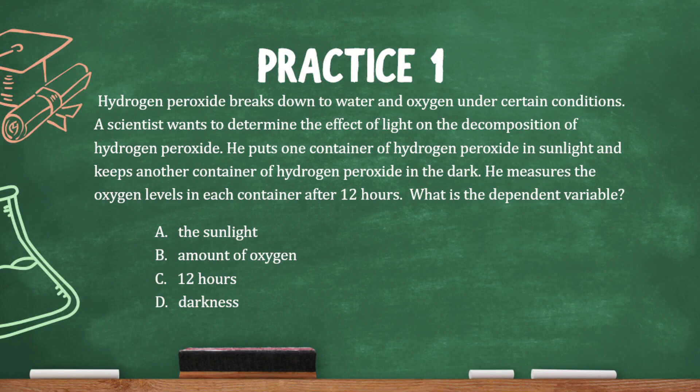Let's do a practice question. Hydrogen peroxide breaks down to water and oxygen under certain conditions. A scientist wants to determine the effect of light on the decomposition of hydrogen peroxide. He puts one container in sunlight and keeps another in the dark, then measures the oxygen levels in each container after 12 hours.